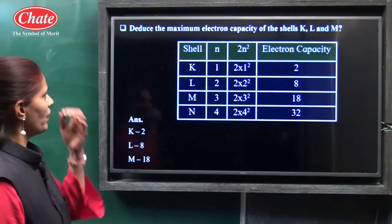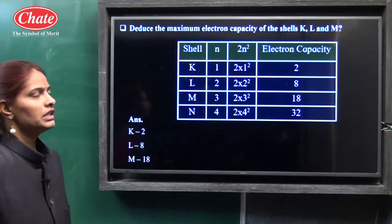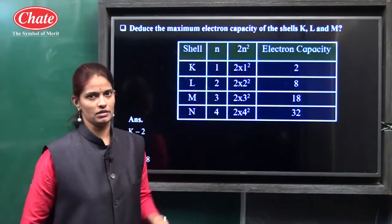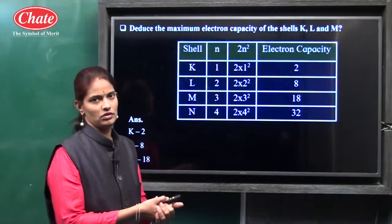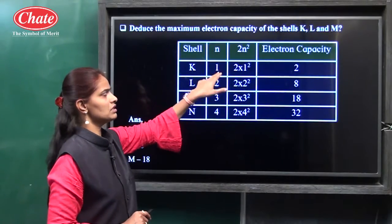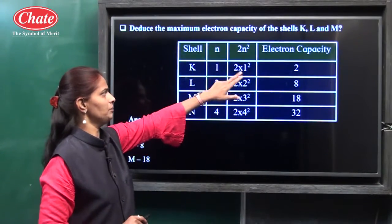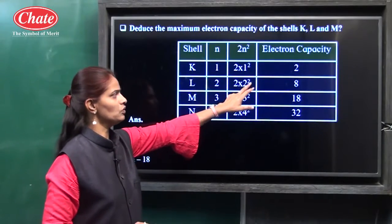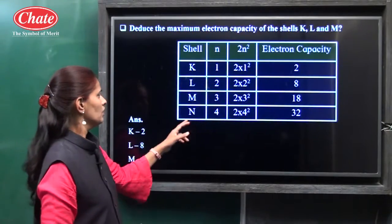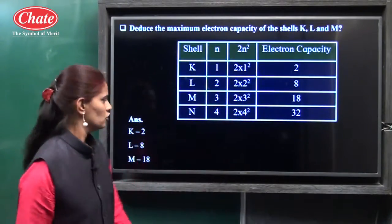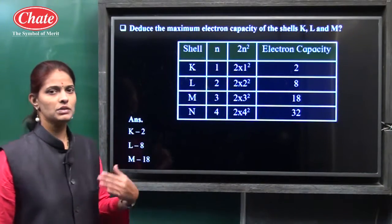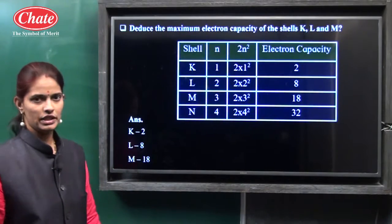Then: find the maximum electron capacity of the K, L, and M shells. The standard formula is 2n², where n is the number of the shell. For K shell (n=1): 2×1² = 2. For L shell (n=2): 2×2² = 8. For M shell (n=3): 2×3² = 18. For N shell (n=4): 2×4² = 32. So K shell has maximum capacity 2, L shell 8, M shell 18.